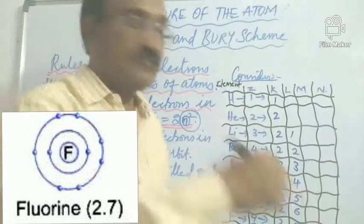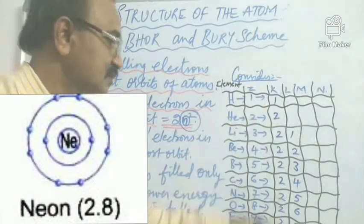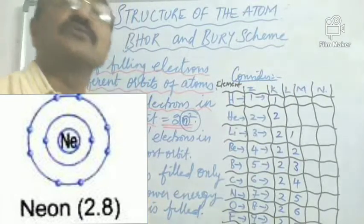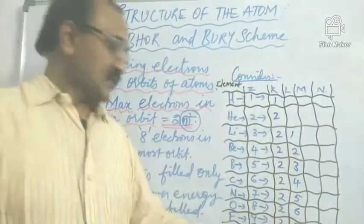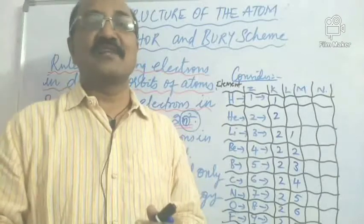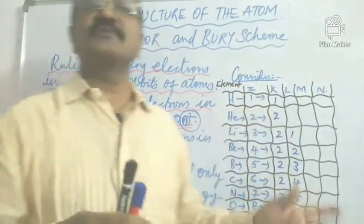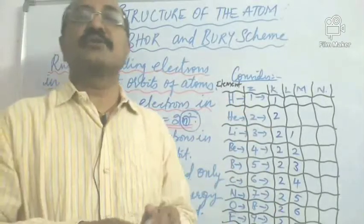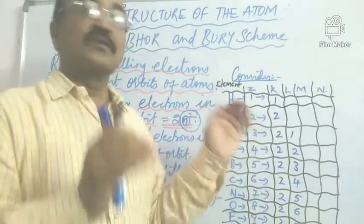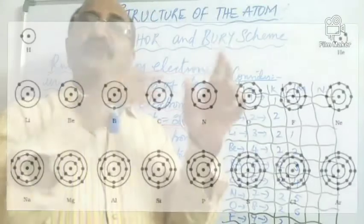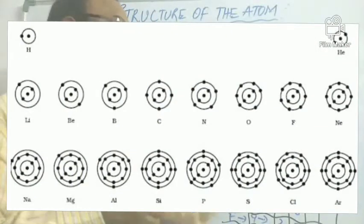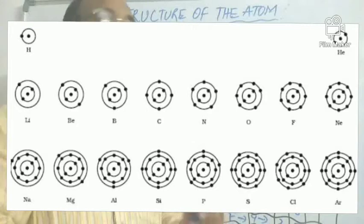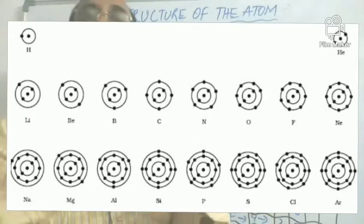We are seeing that the maximum the first orbit can take is 2, so that is filled. And for neon, the second orbit is also filled to its maximum capacity of 8. We also see the pictorial representations for each of these — the shells are denoted by circles around the nucleus, with electrons filled in the different shells shown in the graphical representation. You can observe that the shells are getting filled in a certain order.